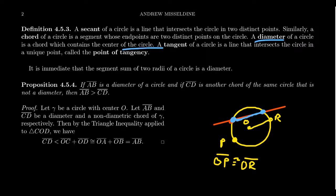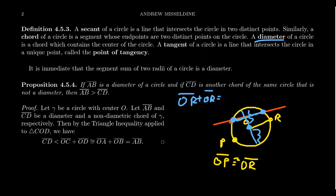A diameter of a circle is a chord that contains the center of the circle. It's immediate that the sum of two radii is the diameter. If you take two different radii and put them together, you form a diameter: OC plus OD equals the diameter. A diameter is essentially two radii, i.e., two times r. We can also argue that a diameter is the maximal chord, which we'll address shortly.